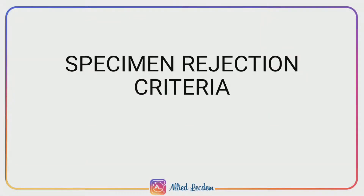Welcome to everyone. This is your allied health lecture channel to enhance your understanding. Today's topic is about specimen rejection criteria. Sometimes tests cannot be performed in the laboratory if samples fall short of the quality, volume, or other laboratory criteria. In these cases, the laboratory may need to reject the samples and not carry out processing.